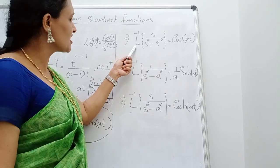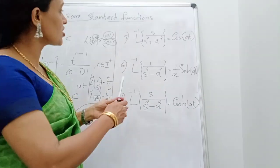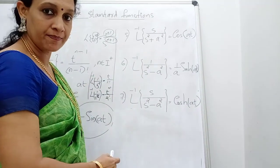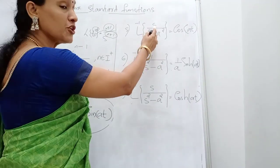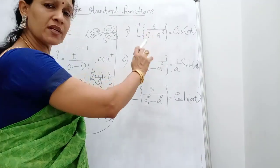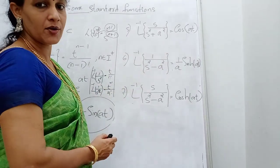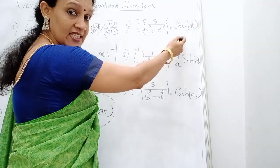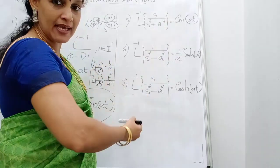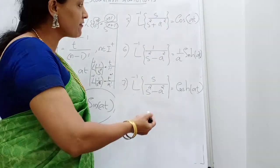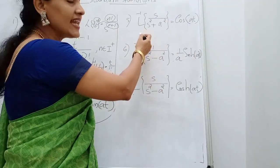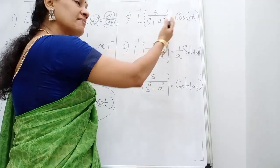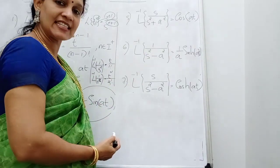Now L inverse of s/(s²+a²). We know if s is in the numerator, the function is cosine. Since L of cos(at) is s/(s²+a²), therefore L inverse of s/(s²+a²) is cos(at).